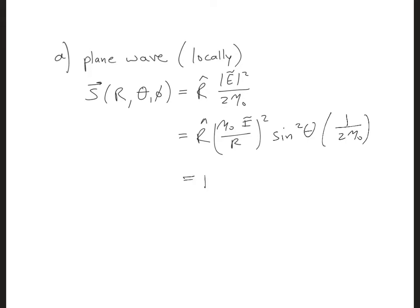So now I can cancel one of the η₀s. So I'm going to get just η₀ on the top, i squared over 2r squared and sine squared theta. And the units are watts per meter squared.